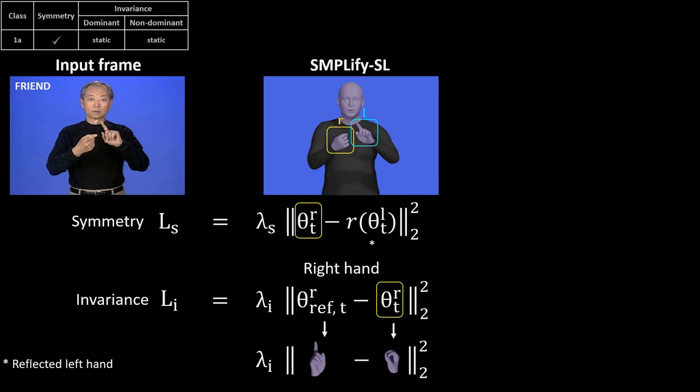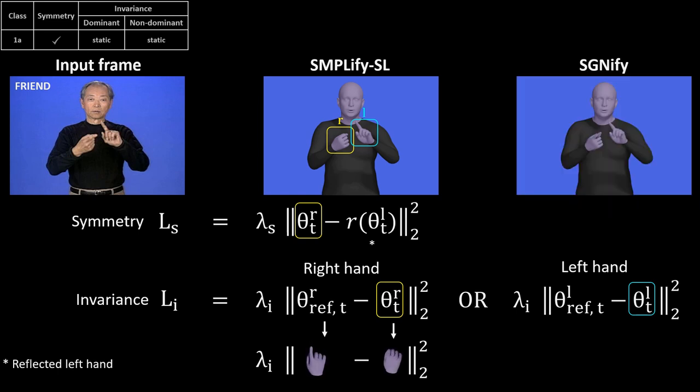Our invariance constraint penalizes differences between an automatically detected reference hand pose and the per-frame estimated hand pose. Signify also applies the hand pose invariance prior to the left hand. By leveraging these linguistic constraints, Signify is able to accurately reconstruct both hands.